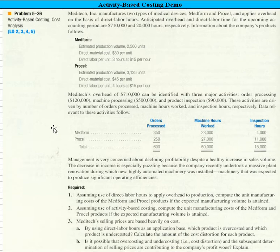Management is concerned because they're seeing declining profitability despite an increase in sales. What has them puzzled is that they've recently put in some highly automated machinery and expected to see some significant operating efficiencies. Let's look at the first requirement and solve that — assuming the traditional approach, direct labor hours as applied to overhead, let's compute the manufacturing cost for the two products.